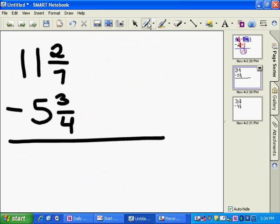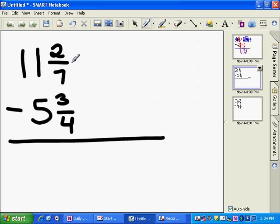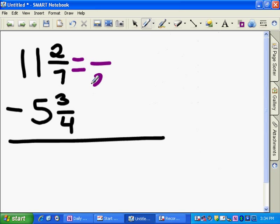Let's try this next example. If you have 11 and 2 sevenths minus 5 and 3 fourths, we're going to start off by getting a common denominator. We're going to get a common denominator of 28. So 2 sevenths becomes 8 over 28, and 3 fourths becomes 21 over 28.